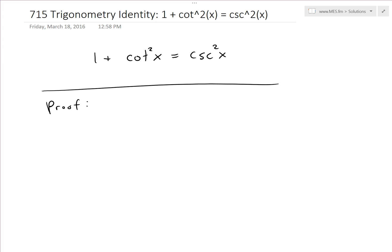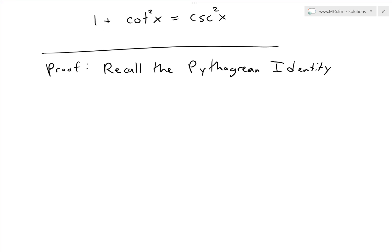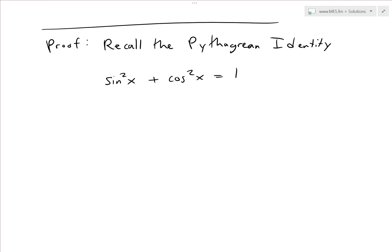So recall the Pythagorean identity. It's called the Pythagorean identity because it uses the Pythagorean theorem to derive, and that's just sin²x + cos²x = 1. Again, the proof for this is in my earlier video and you can see that in the video links below.